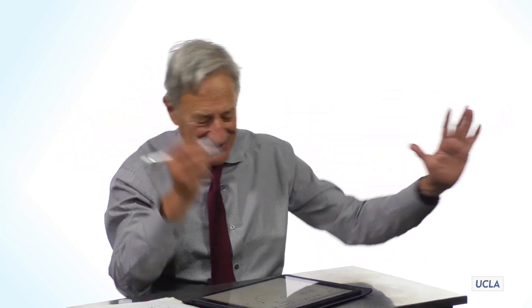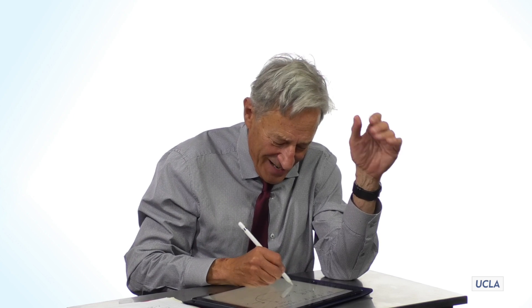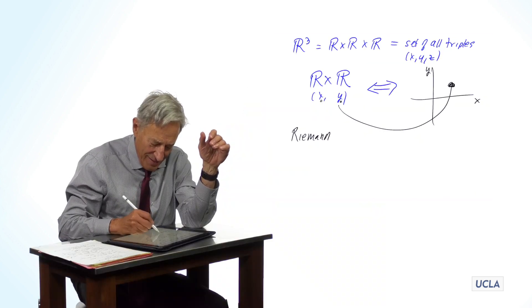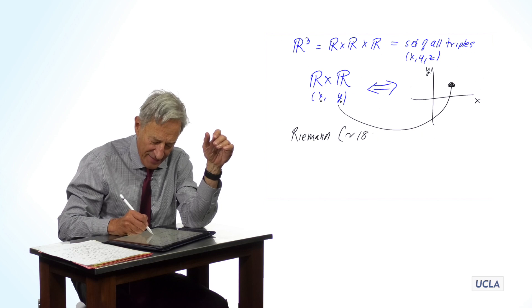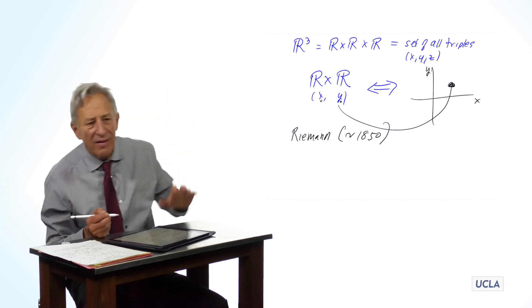But then there's one other mathematical idea, which is so important that we have to give a shout out to the guy, and the guy is Riemann, and the year is around 1850. And he said, and he realized a mind-blowing thing.